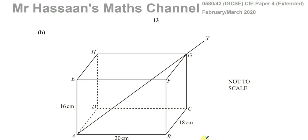Welcome back. This is Mr. Hassan's Math Channel and I'm now answering question number 8 part B from the February-March 2020 IGCSE Cambridge paper 4, from the 0580 syllabus. This is paper 4 variant 2.